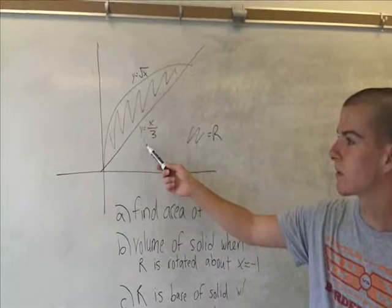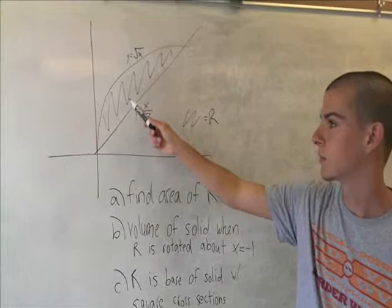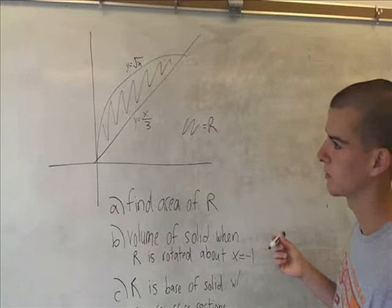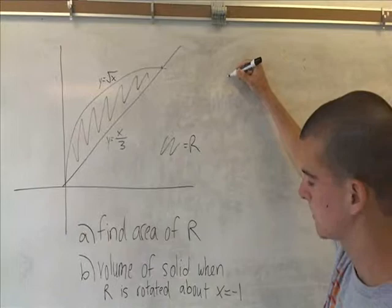Okay, so for our problem, we have this graph with y equals x over 3 and y equals square root of x. And for part A, we're trying to find the region, the shaded region between each graph. The first thing we've got to do is find the intercept here, because we're going to need to integrate from 0 to this point, whatever it is.